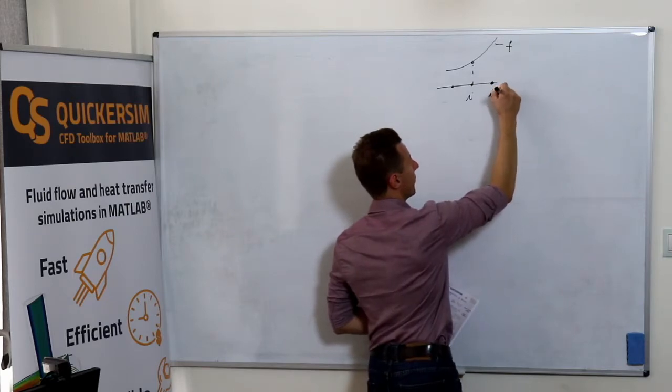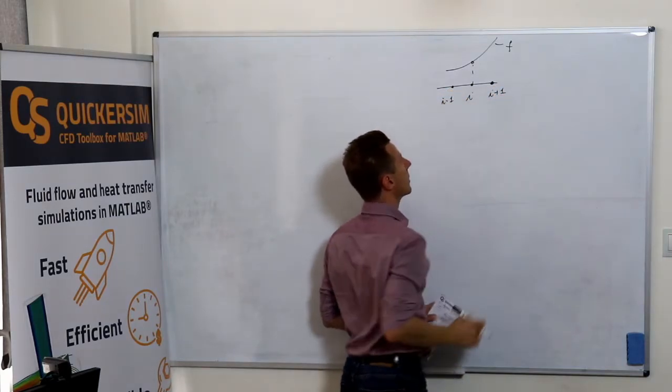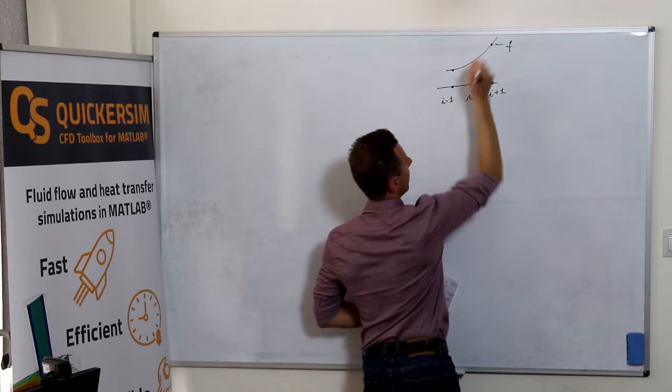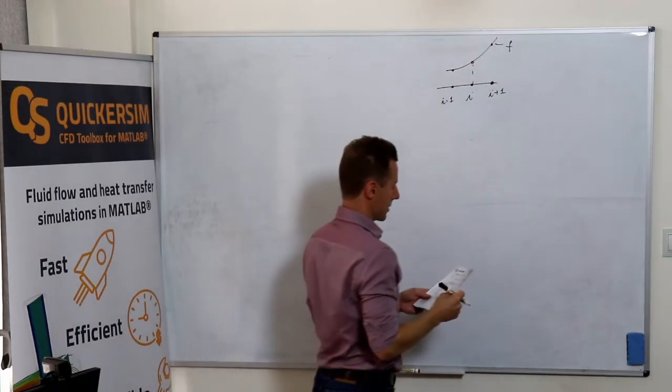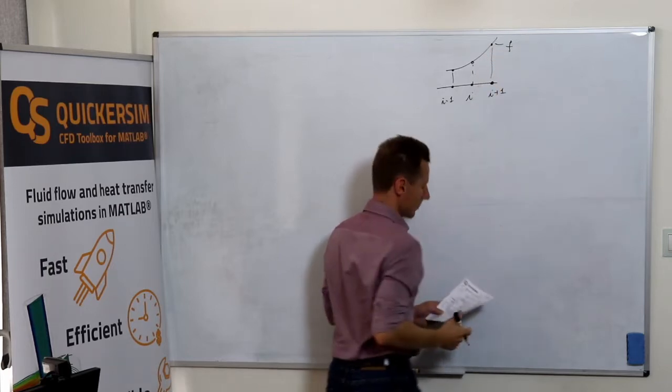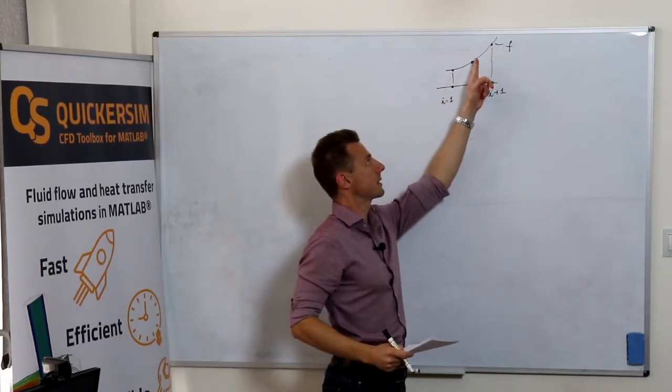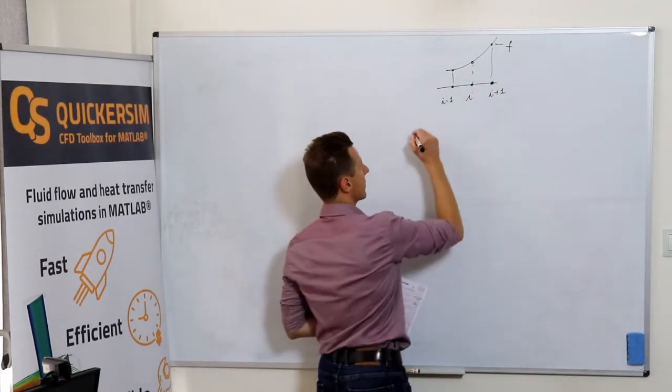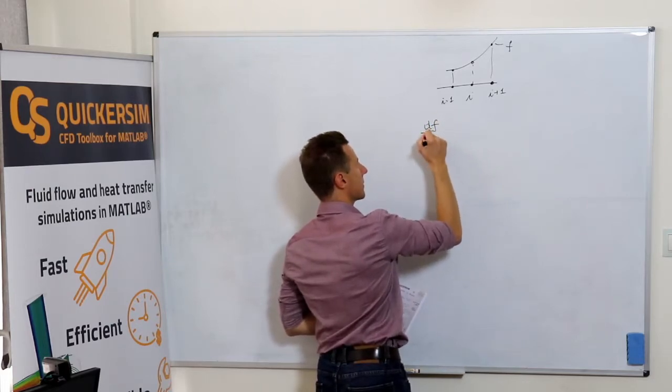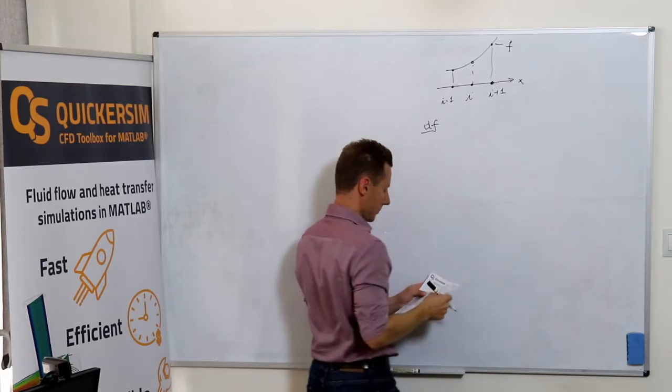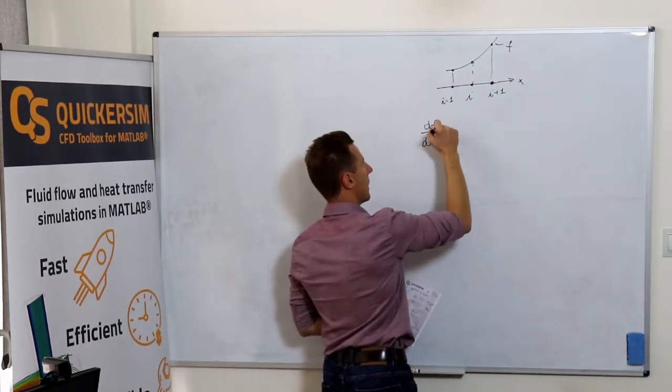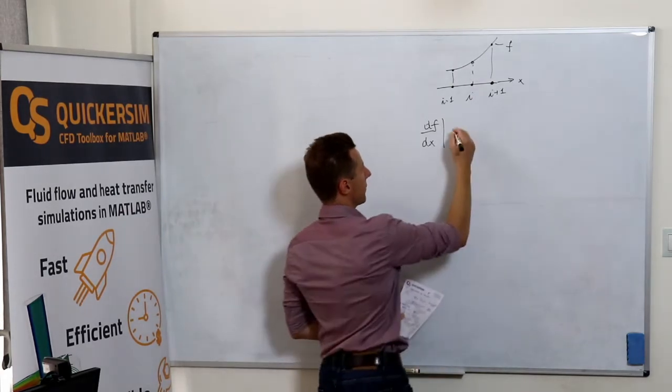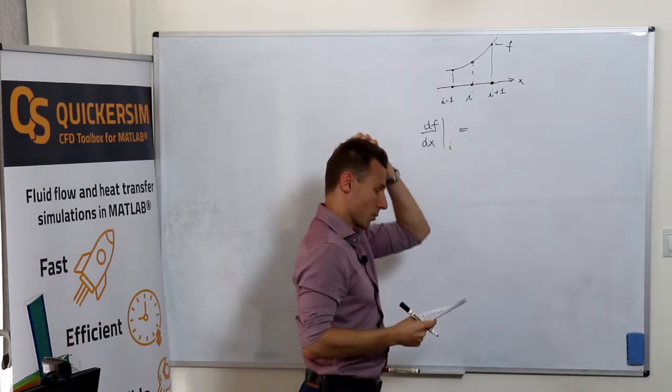We've got three corresponding function values at each of these locations. What we are interested in is, based on these three discrete f values, calculating the first derivative with respect to X at the ith node, the approximation of this value.